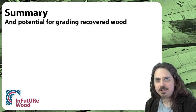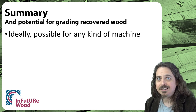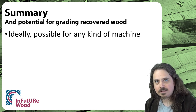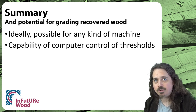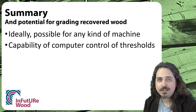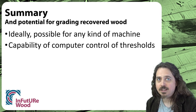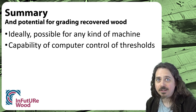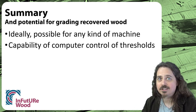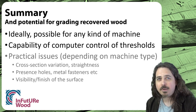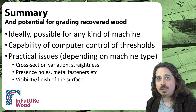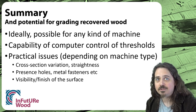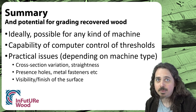If we're going to come up with a new system of strength grading for secondary timber, in an ideal world it would be possible to use any of these kinds of grading machine, but there are a few things to consider. Probably the most important one is the ability to control the machine with a computer, because it's quite likely that the settings of the machine — the thresholds of the indicating property — would need to be adjusted more rapidly than with new wood, and on the basis of previous indicating property measurements. Other practical issues that would have to be dealt with by the grading or initial processing are: lack of uniformity in the cross-section, lack of straightness, holes, metal fasteners in the wood, and any problems with the surface finish.